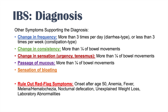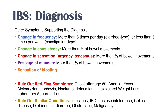IBS is essentially a diagnosis of exclusion — we need to rule out red flag symptoms before making a diagnosis. Red flag symptoms include onset after age 50, anemia, fever, melena or hematochezia, nocturnal defecation, unexplained weight loss, and laboratory abnormalities. We also need to rule out similar conditions such as infections like Entamoeba histolytica, inflammatory bowel disease, lactose intolerance, celiac disease, diet-induced diarrhea, obstruction, and malignancy.